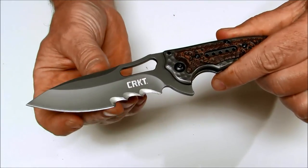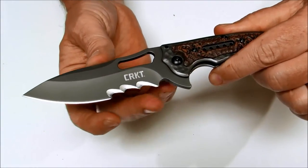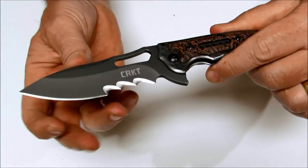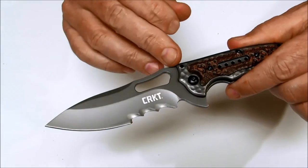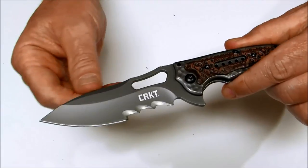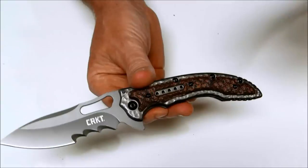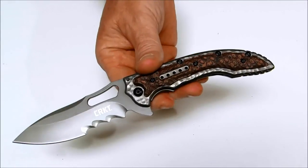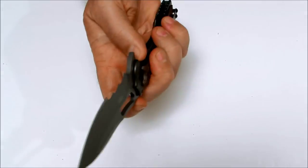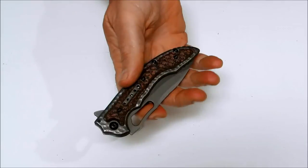It has these really mean VEF serrations on this particular model. You can also get it with a plain edge. This one has the EDP black blade finish. It's got a hollow ground drop point style blade. The blade steel is 8CR13MOV and it has been hardened to 58 to 60 HRC.